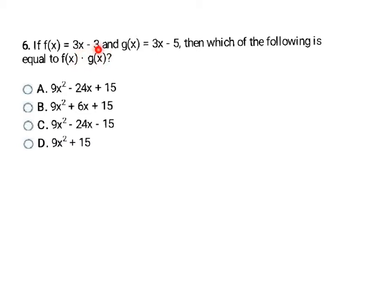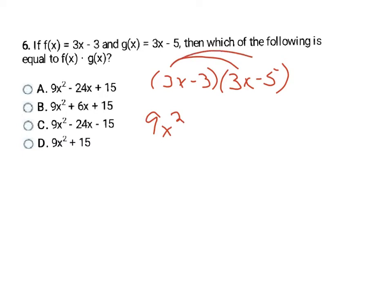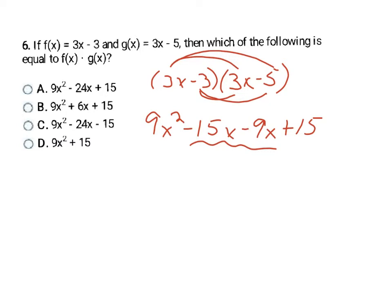Here they've asked us to multiply our two functions. I'll use parentheses around them to show the multiplication. This is a FOIL problem: 3x · 3x = 9x², then 3x · (−5) = −15x, then −3 · 3x = −9x, then −3 · (−5) = +15. Combining like terms: −15x − 9x = −24x. Final result: 9x² − 24x + 15, which is letter A.